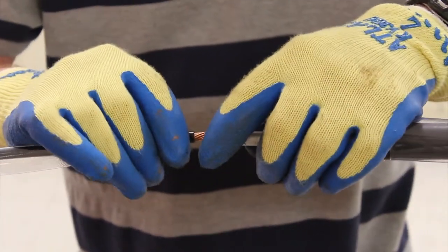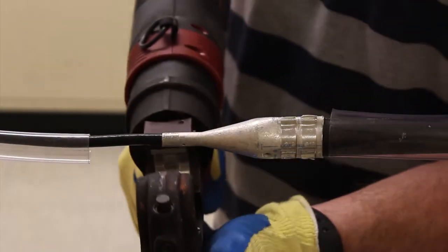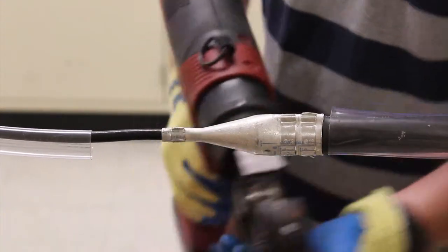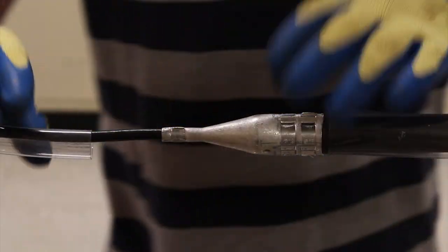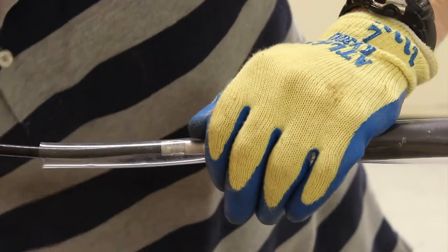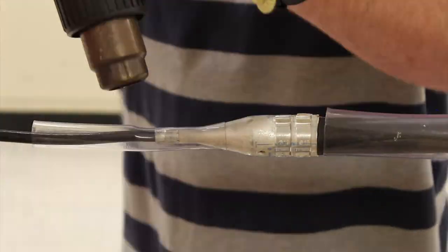Then, using the same steps above, connect barrel 2. Once the splice is fully crimped, slide the smaller piece of heat shrink over barrel 2 until it stops. Apply heat until full shrinkage is reached.